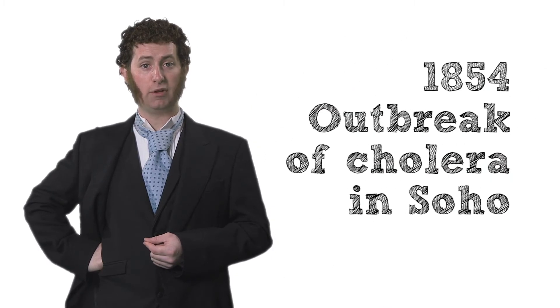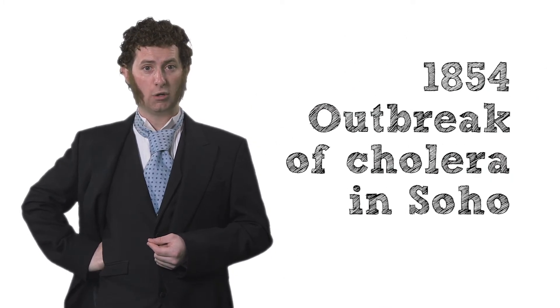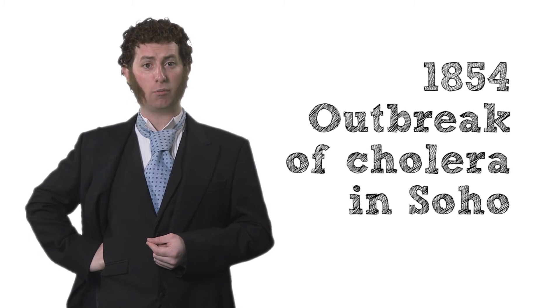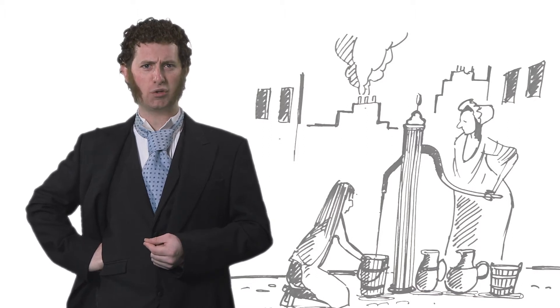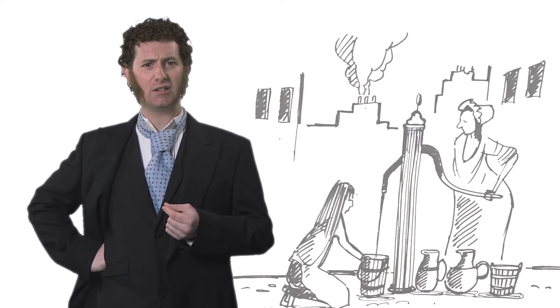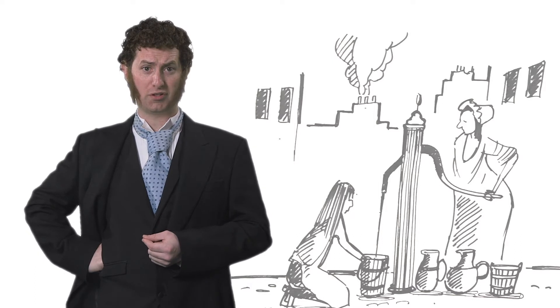It was in August 1854 when the suburb of London known as Soho was hit very hard by an outbreak of cholera. Living close to Soho, I immediately went to work to try to prove it was contaminated water that caused the outbreak.